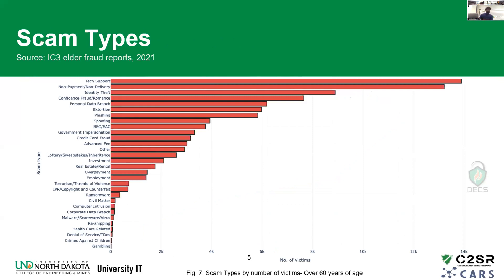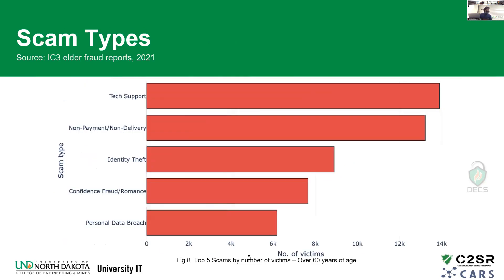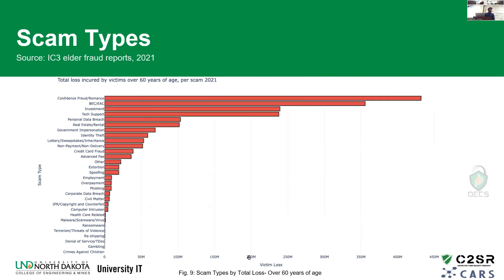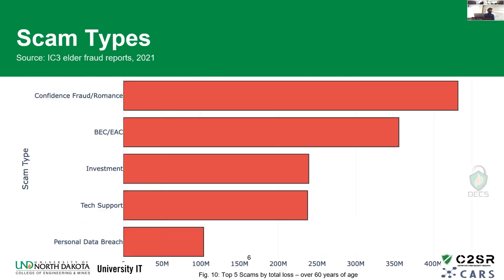This bar chart indicates 30 types of scams by the number of victims in 2021. The top five scams by number of victims are technical support, non-payment or non-delivery, identity theft, confidence or romance frauds, and personal data breaches. The next bar chart shows the same 30 scams but by total amount of losses. The top five by amount of loss are confidence or romance fraud, BEC, investment scams, tech support scams, and personal data breaches.